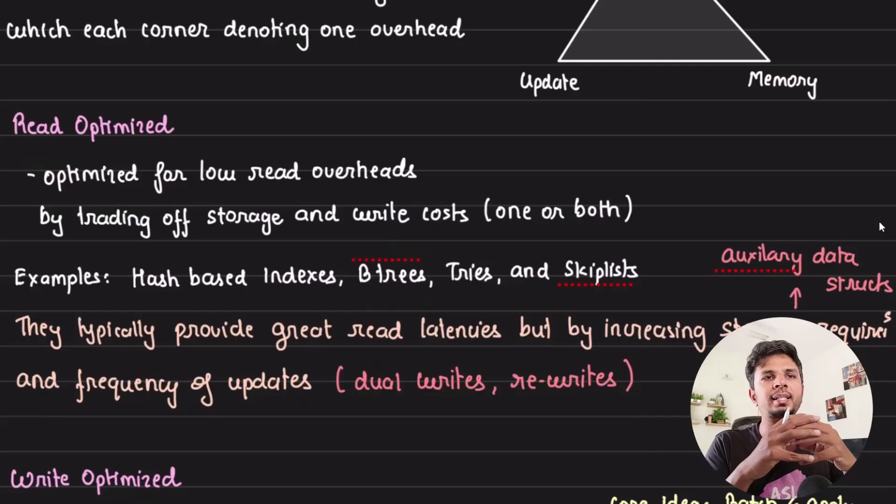In some cases, when we're giving users great read latencies by making data redundant so we can support a large number of reads, we're increasing storage requirements. But now writes have to go to multiple places, doing dual writes or re-writes in order to improve read latencies. There's always this complete triangle.